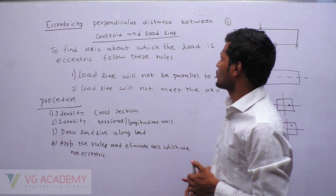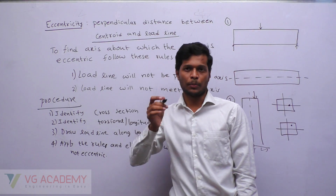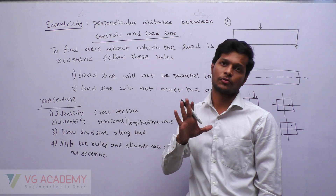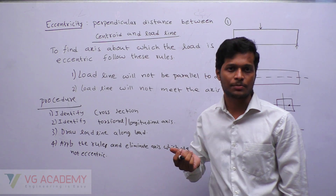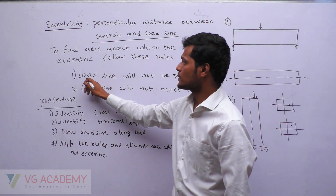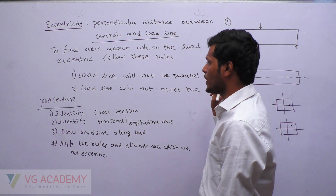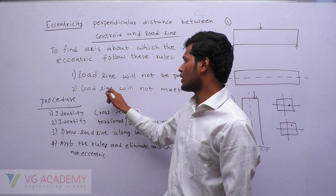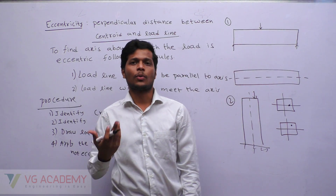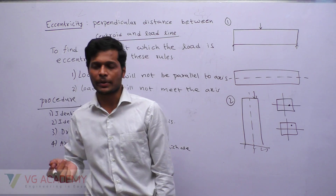To find the axis about which the load is eccentric, follow these rules. This shortcut will be very useful while understanding structural subjects. The first rule is: the load line will not be parallel to the eccentric axis. The second rule is: the load line will not meet the eccentric axis.